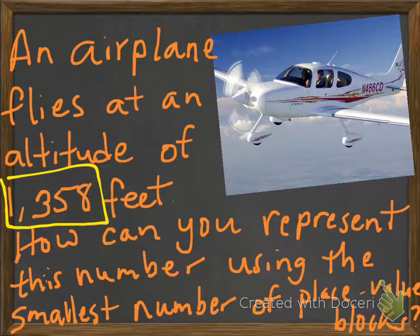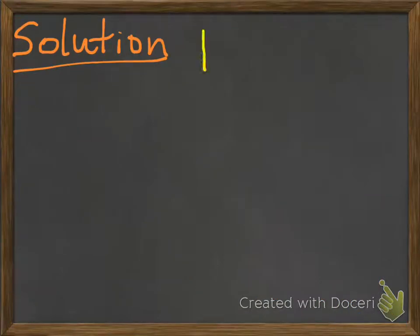So let's take a look at it. So our number is 1,358. And there are several ways we could actually represent this. Now one, as we mentioned, is expanded form.